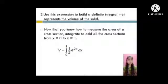Second, use this expression to build a definite integral that represents the volume of the solid. Now that you know how to measure the area of a cross section, integrate to add all the cross sections from x equals 0 to x equals 1.